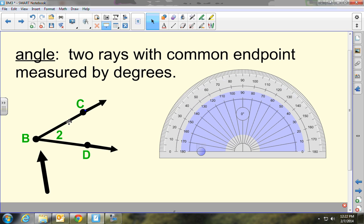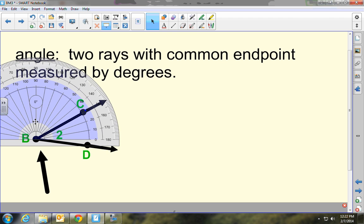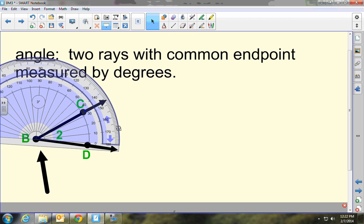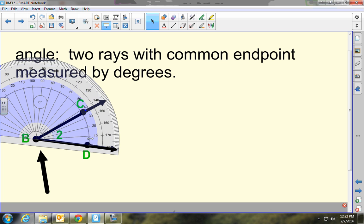Okay, the angle would be angle 2, or we could call it angle CBD, or we could call it angle DBC. And if we wanted to measure, we would line up the protractor right on the vertex. Okay, we'd turn it just like that, and we could see that this angle is 10, 20, 30, not quite 40, but maybe about 37 degrees. Okay, I'm using the inside numbers, not the outside, because the outside numbers are too big for this particular angle.